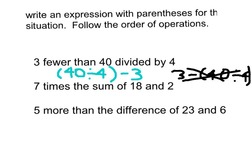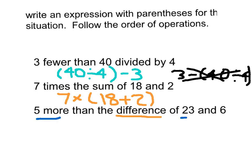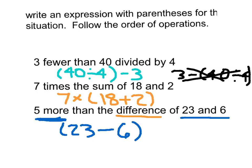The next problem is 7 times the sum of 18 and 2 — so 7 × (18 + 2). Remember, the difference is the answer to a subtraction problem, so you need a subtraction operation inside your expression. The last problem says 5 more than the difference of 23 and 6. Start with that difference: 23 minus 6. Then it says 5 more than that, so add 5: (23 − 6) + 5. It's important to put parentheses in there so we're very clear and no one makes a mistake.